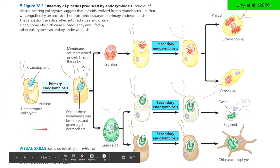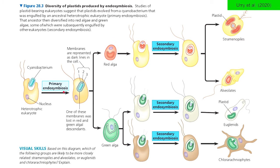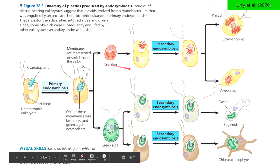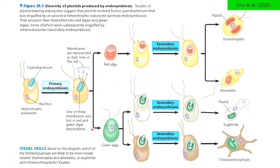Primary endosymbiosis began when a heterotrophic eukaryote ingested, through phagocytosis, a cyanobacterium — a photosynthetic bacteria. They formed an endosymbiotic relationship wherein the cyanobacterium continuously performed its photosynthetic processes. This organism eventually gave rise to two groups of algae: red alga and green alga, which then lived independently as organisms.